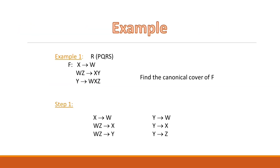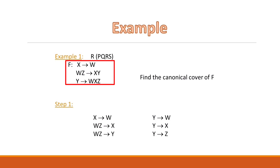Let's work out an example so that we can understand the algorithm in a better way. In the example we have been given a relation R with attribute set P, Q, R, S. A set of FDs have been given that is F, and we have to find the canonical cover of F.